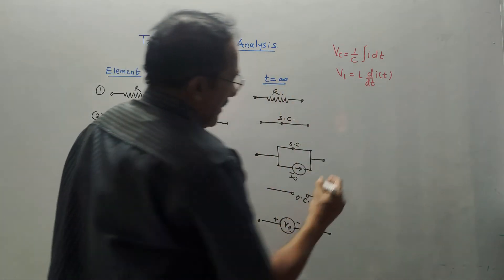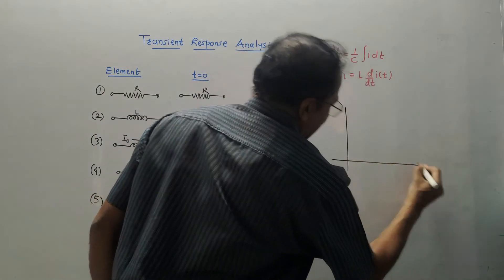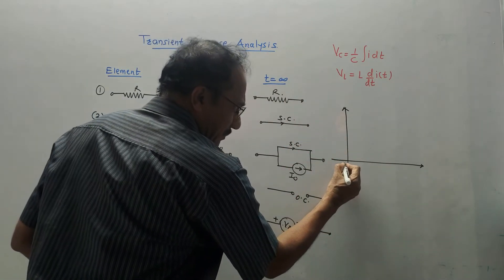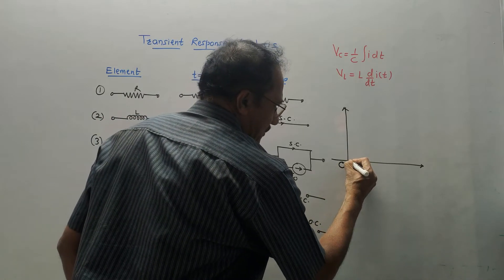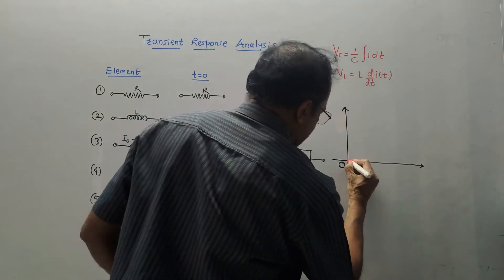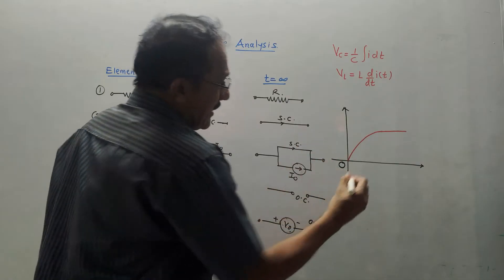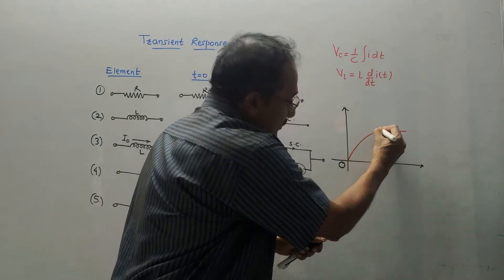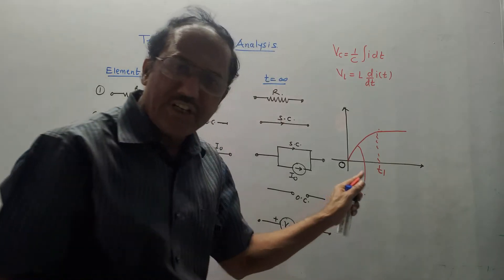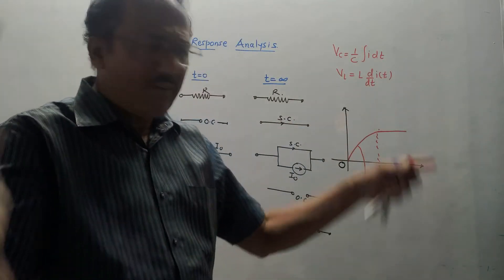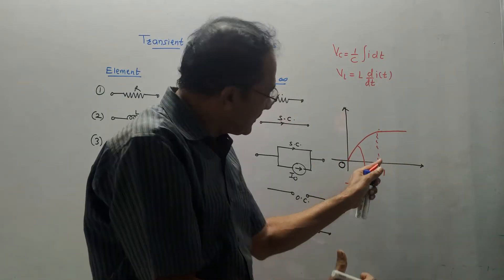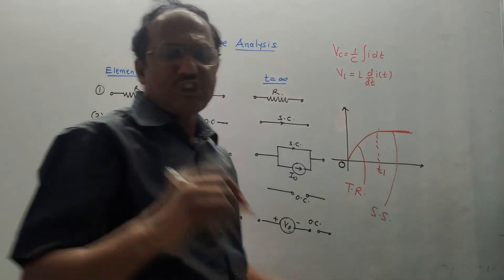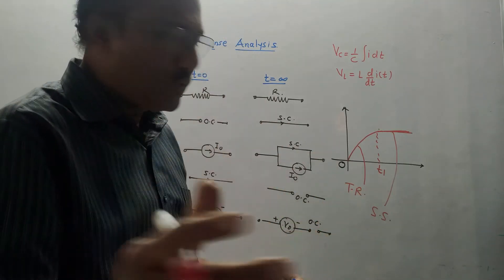The next unit is transient response analysis. There are two types of responses: transient response and steady state response. If the output response is changing with respect to time (e.g., exponentially increasing from 0 to T1), it is called transient response. After T1, when the response remains constant, it is called steady state response.